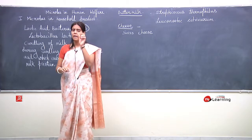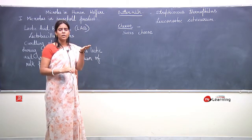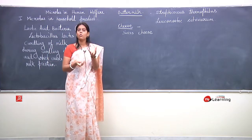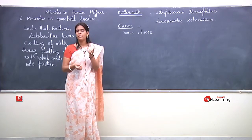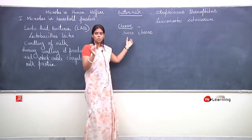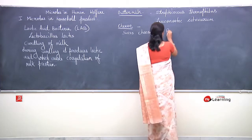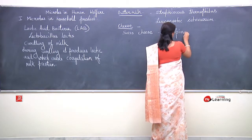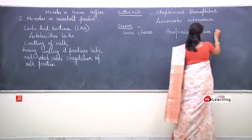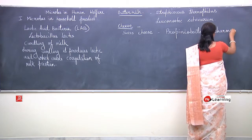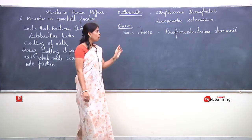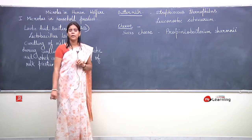Swiss cheese is mainly characterized by large holes in it. Cheese formation ke waqt jab bacteria fermentation carry out karte hain, fermentation ke waqt jo CO2 liberate hota hai, that CO2 escapes out of the cheese leaving some gap. So swiss cheese is mainly characterized by large holes. Swiss cheese is mainly produced by Propionibacterium shermanii.